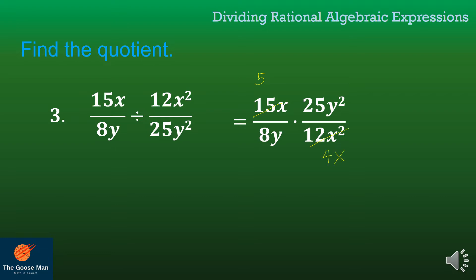Next, y squared and y are divisible by y, so y divided by y is 1, while y squared divided by y is y. Multiplying the remaining factors: 5 times 25 times y all over 8 times 1 times 4x gives us 125y all over 32x.